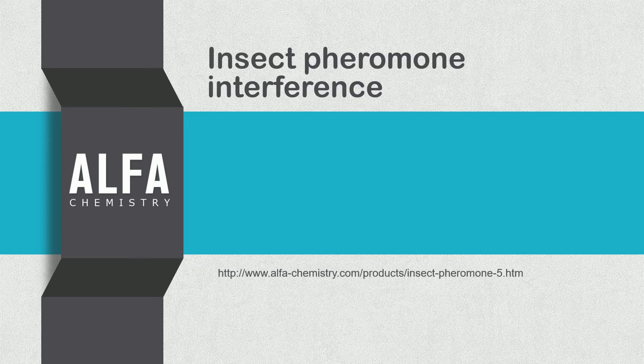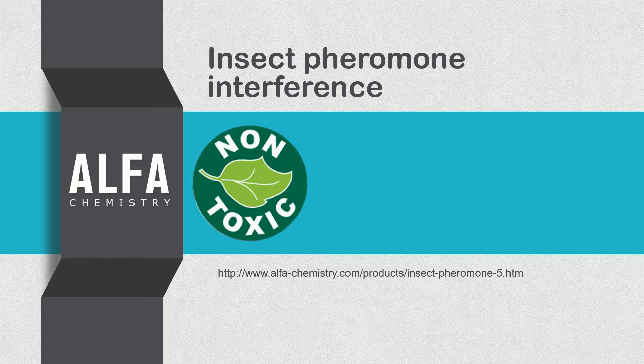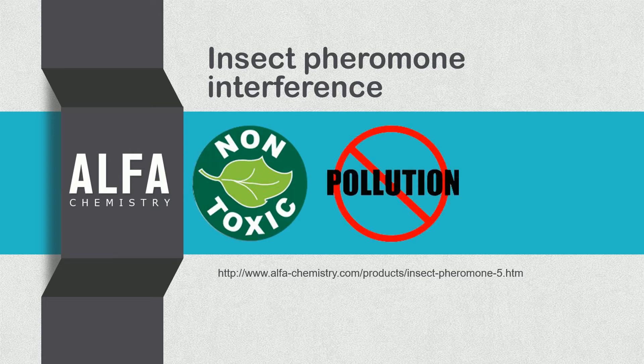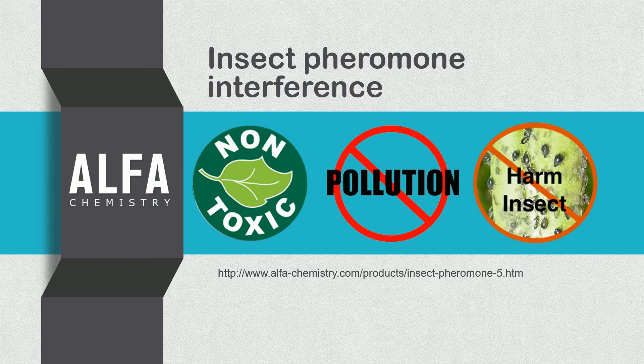Insect pheromone interference has been one of the pest control technologies since the 1960s. Compared to others, insect pheromones are known for their high efficiency, non-toxicity, no pollution, and no harm to non-target insects. The technology is available for use both indoors and outdoors.